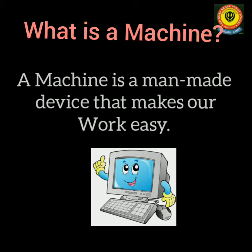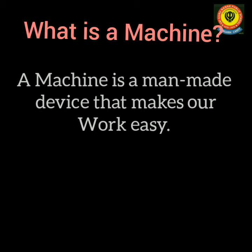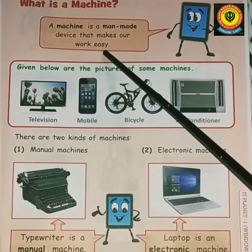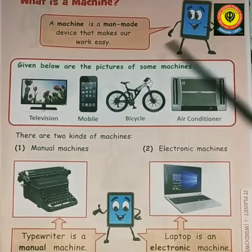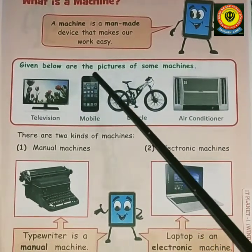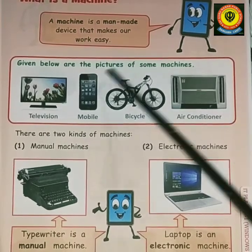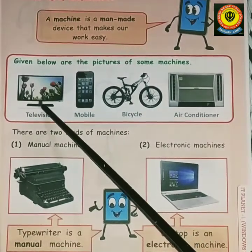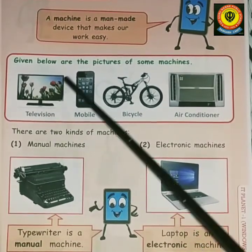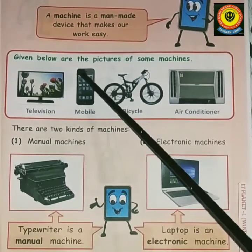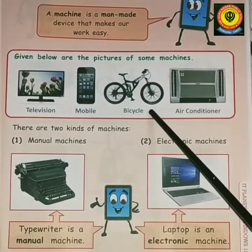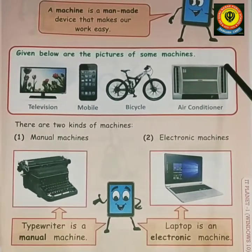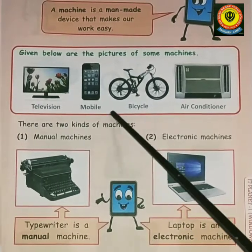What is a machine? A machine is a man-made device that makes our work very easy. We can do our work with machines very easily. Some examples of machines are: television — we watch cartoons, movies, and many things with its help. Next is mobile phone, which is also a machine. Then there is bicycle, air conditioner, and many more machines we use in our daily life.